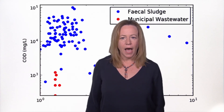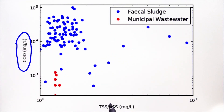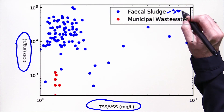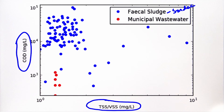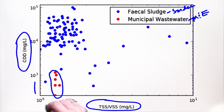So what does all this variability actually mean in terms of quantification? This figure illustrates COD values plotted against total suspended solids to volatile suspended solids for fecal sludge analytical results from some of Sandec's research studies. In comparison, it also shows values for influent of wastewater treatment plants taken from the Metcalf and Eddy reference. Note that it's on a logarithmic scale. Fecal sludge is up to two orders of magnitude more concentrated than wastewater, in addition to being highly variable. The same technologies will have widely ranging characteristics, and areas within the same city will have widely ranging characteristics.